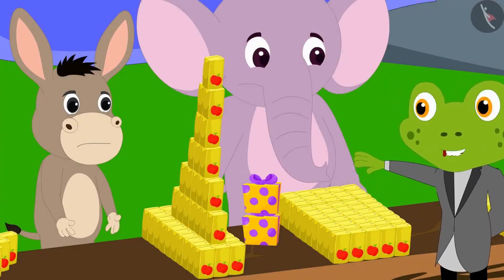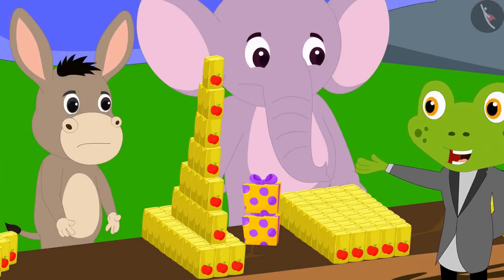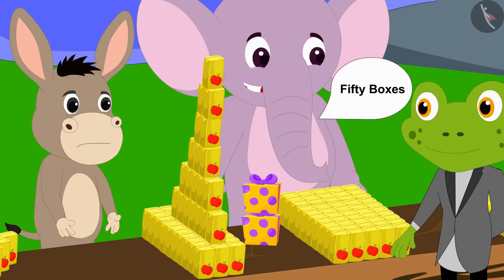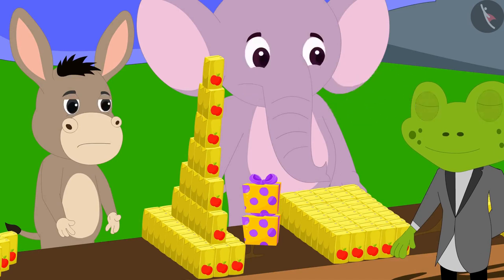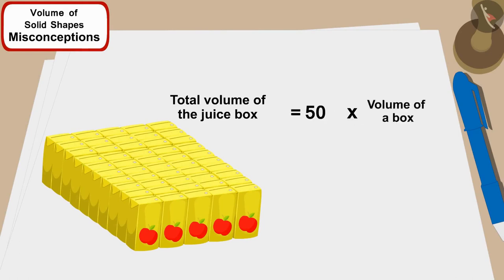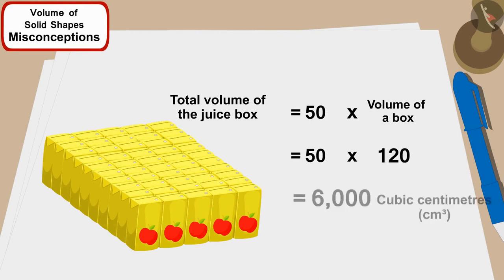Appu, how many juice boxes have you used in your shape? Appu quickly said: 50 boxes. This means the total volume of juice in Appu's shape is 50 times 120, equal to 6,000 cm³.